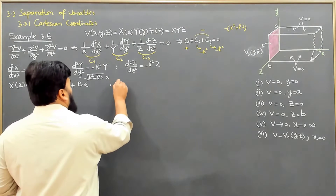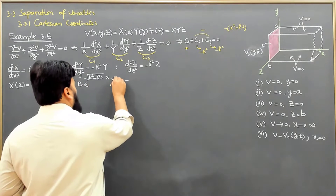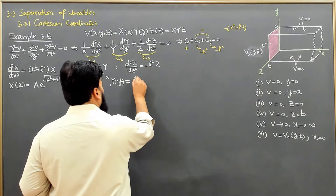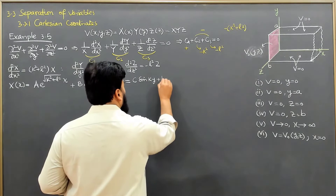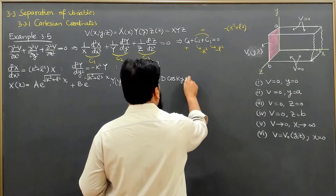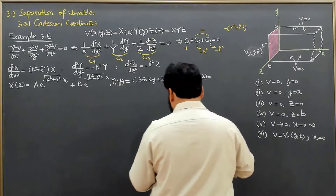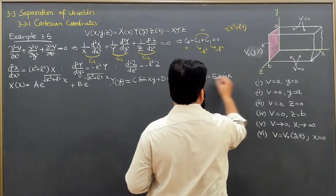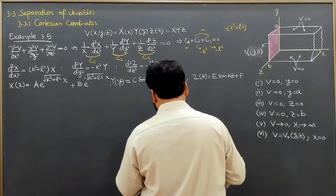Similarly, Y(y) will come out to be equal to c·sin(ky) + d·cos(ky), while Z(z) will come out to be e·sin(lz) + f·cos(lz), where the variable y is replaced with variable z and the constant k is replaced with l.